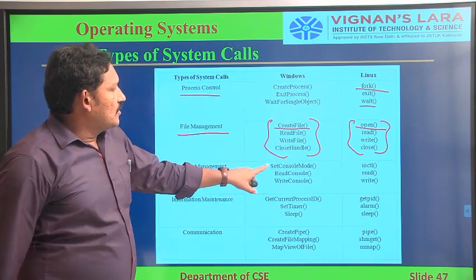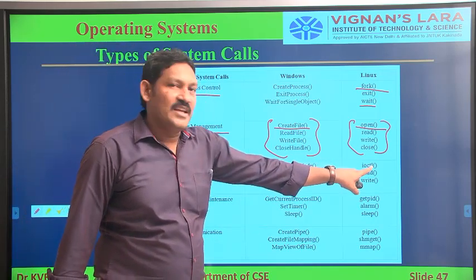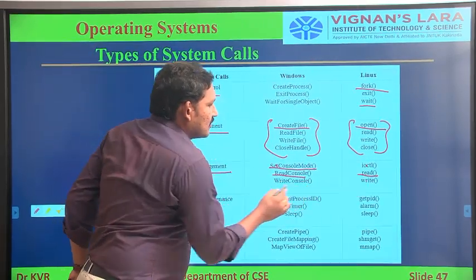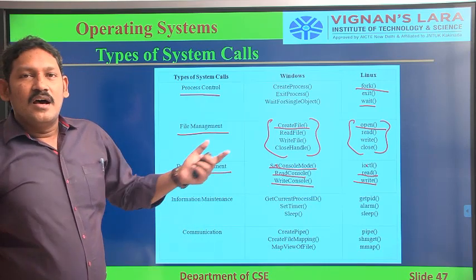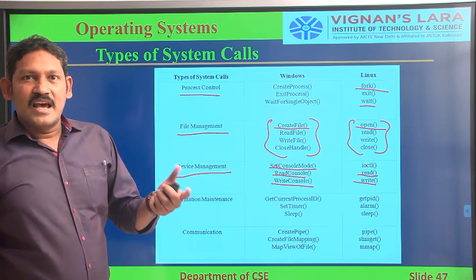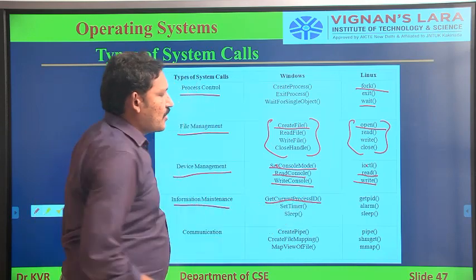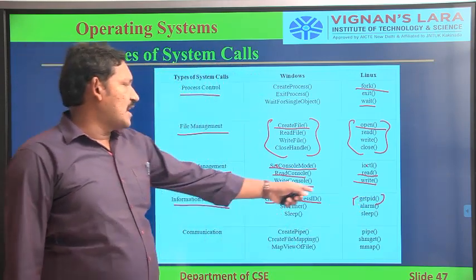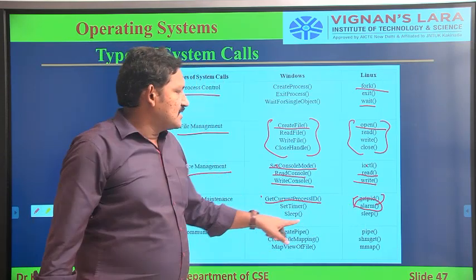Coming to device management: 'SetConsoleMode' in Windows means keeping the device in ready state; the corresponding Linux command is 'ioctl'. 'ReadConsole' is the read operation, and 'WriteConsole' is the write operation. For information maintenance: 'GetCurrentProcessID' in Windows gets the current process ID; in Linux we use 'getpid'. 'SetTimer' in Windows maps to 'alarm' in Linux, and 'Sleep' is used in both.